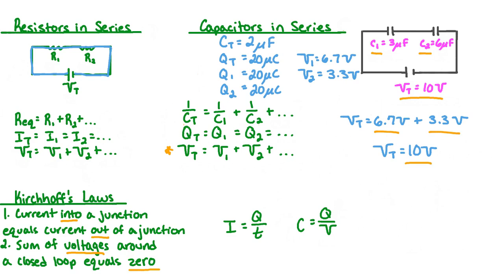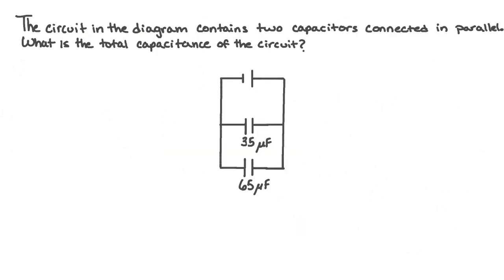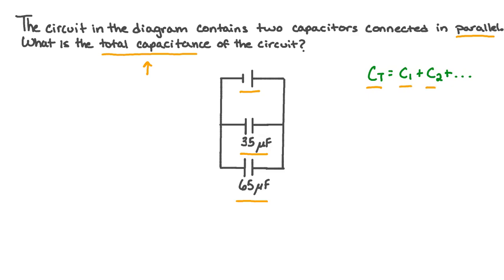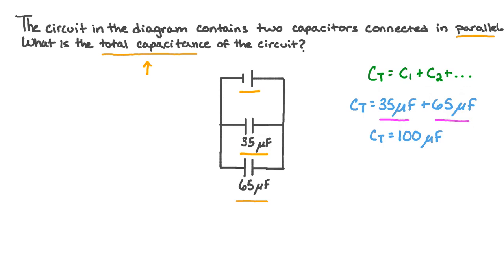We are now ready to apply our understanding of capacitors to an example problem. The circuit in the diagram contains two capacitors connected in parallel: a 65 microfarad capacitor and a 35 microfarad capacitor hooked up in parallel with the battery. To determine the total capacitance, we use the equation Ct equals C1 plus C2. When we add 35 microfarads and 65 microfarads, we get a total capacitance of 100 microfarads.